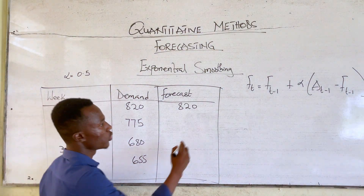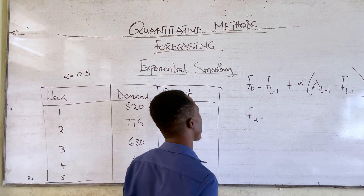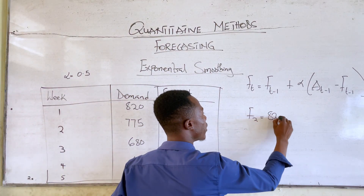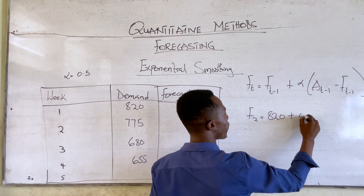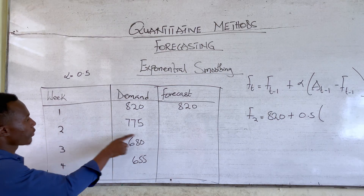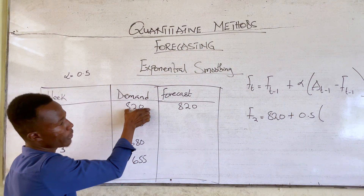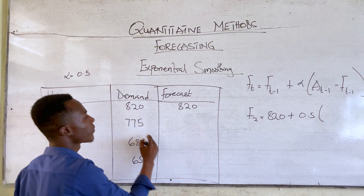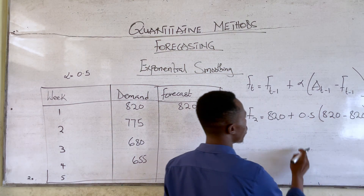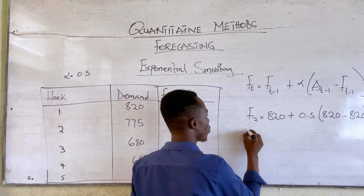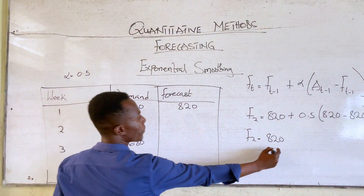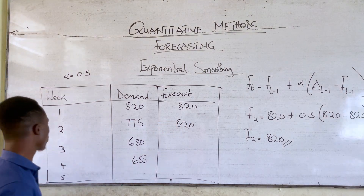For week 2, F2 equals the forecast for the previous week, which is 820, plus 0.5 multiplied by the actual value for the previous week, which is 820, minus 820 — the forecast for the previous week. So 820 minus 820 equals 0, meaning the whole bracket is 0, and F2 equals 820.